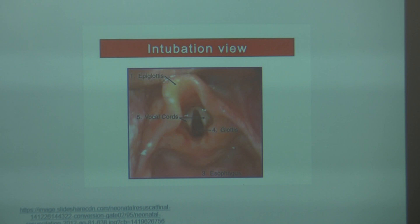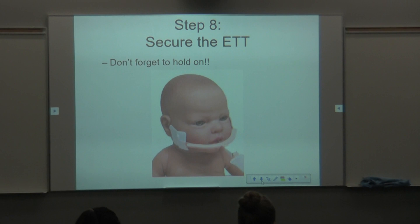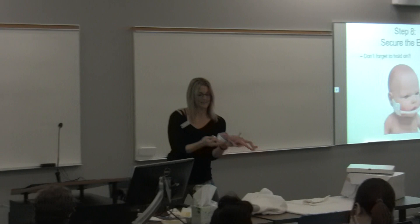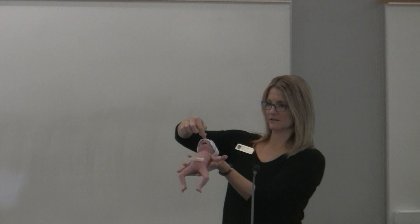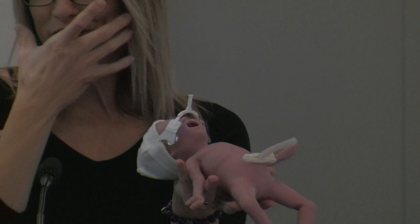You need to secure the endotracheal tube. There's a different type of securing device called a Neobar — it goes on the baby's cheeks and the tube is secured to it. Sometimes that's an easier way than taping. However, because the skin on their cheeks can be a bit loose, it can be difficult to keep in the right spot, so there's definitely a technique to using them. And don't forget to hold the tube at all times — with neonates there's very little play, so you have to be especially careful.